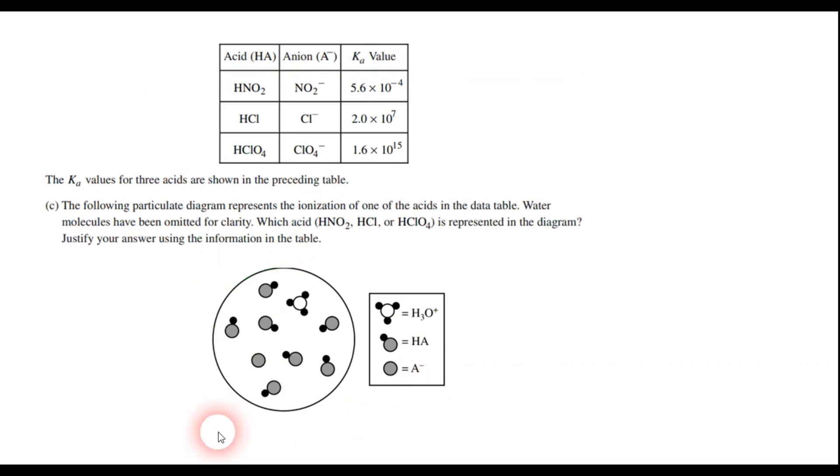The fourth and final point on this problem is an acid problem. It's about Ka. We have Ka for these three acids here. And the question is, in this diagram, it represents one of those three acids. Which acid is it? Nitrous acid, HNO2, hydrochloric, or perchloric? And justify using the information. Well, what you want to notice here is that in the table, we have a whole lot of undissociated acid molecules, which we have labeled as HA.